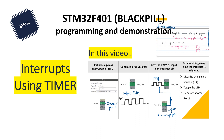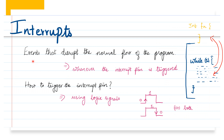This video is for configuring and understanding how to use interrupts in STM32. Interrupts are events that disrupt the normal flow of the program, and this interrupt can be triggered using logic signals like using zero and one — high and low logic.